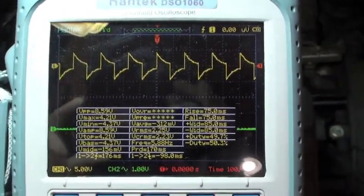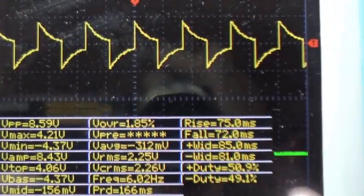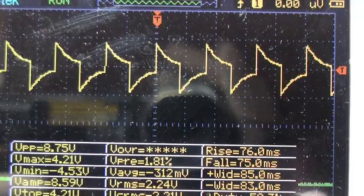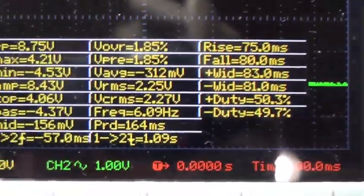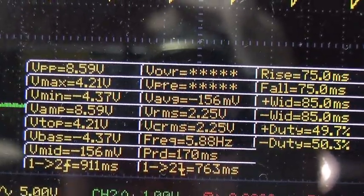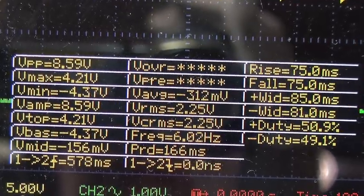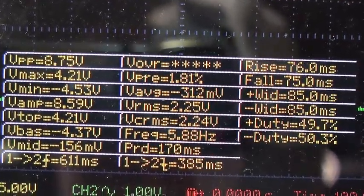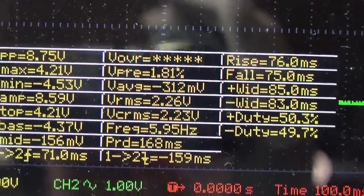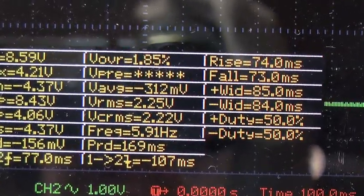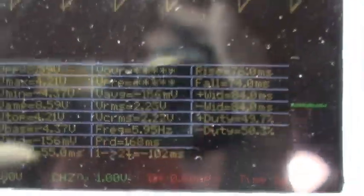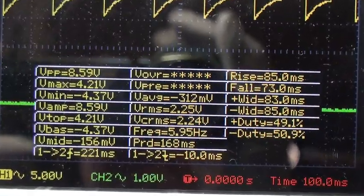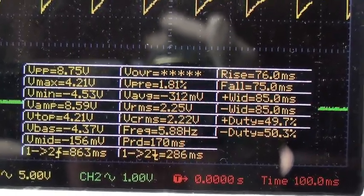And this is the signal I'm getting out of it. Zoom in on that, that's a square wave, and then I'm getting 4 volts up, 4.2 volts up, 4.5 volts down, doing about 5.9 hertz, 5.95 hertz, and my duty cycle is 49-51.